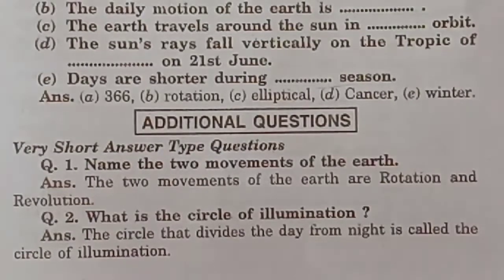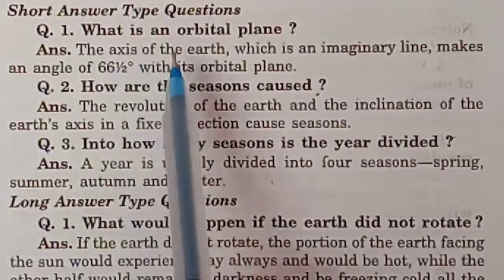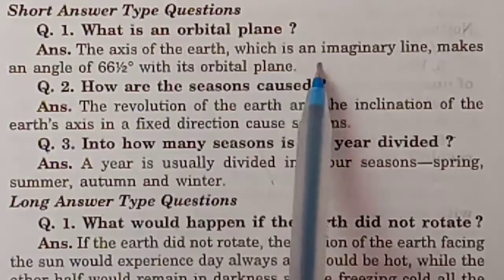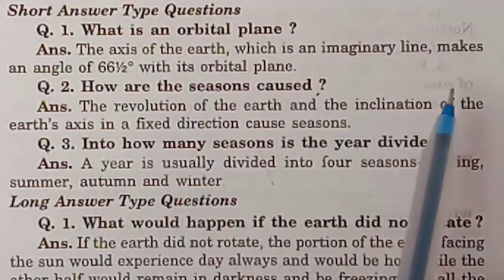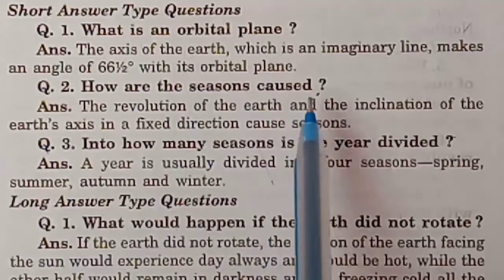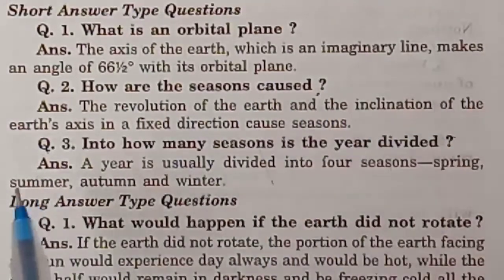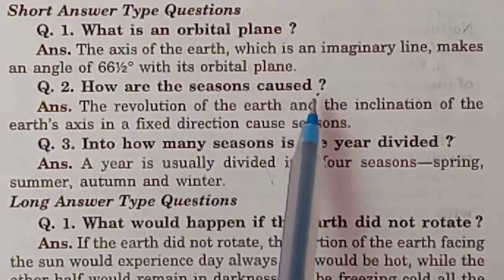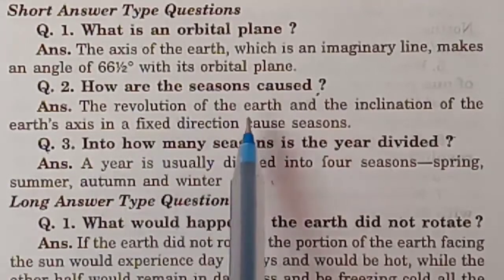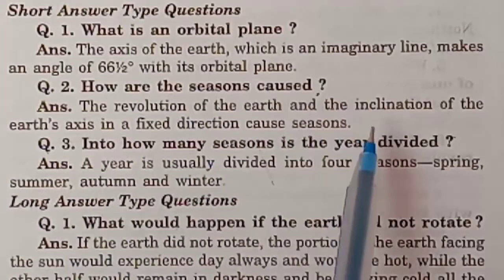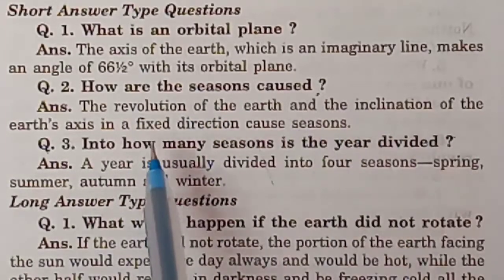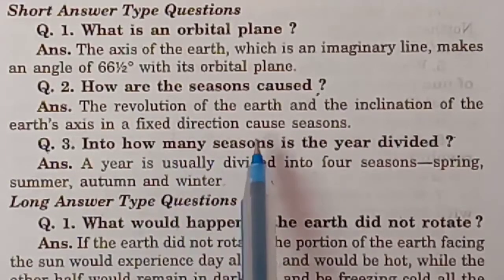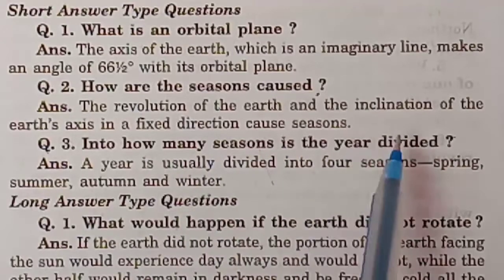What is an orbital plane? The axis of the Earth, which is an imaginary line, makes an angle of 66.5 degrees with its orbital plane. How are the seasons caused? The revolution of the Earth and the inclination of the Earth's axis in a fixed direction cause seasons.